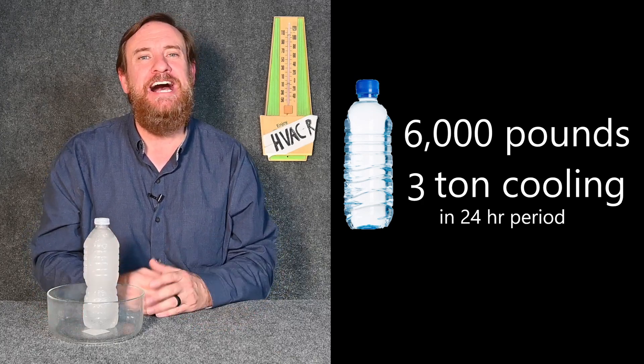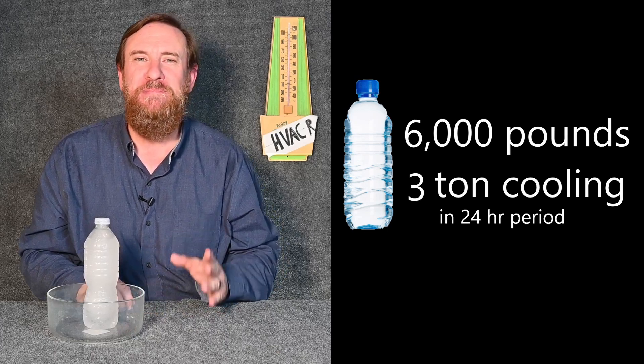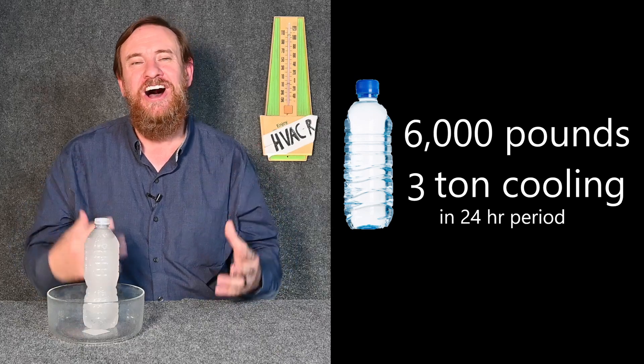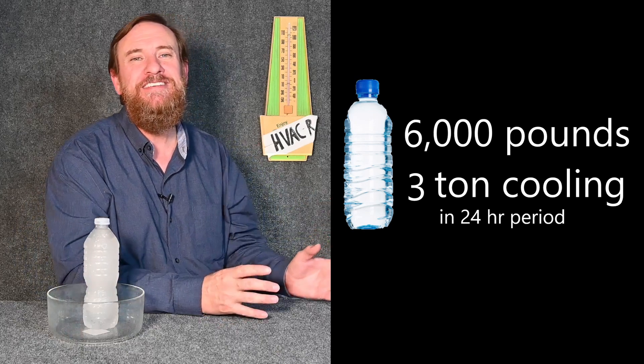That means it has the capacity of the same amount of cooling effect to melt three tons of ice in a 24-hour period. Once you make three tons of ice, you can bring that ice inside of your house, and then you can cool your house.